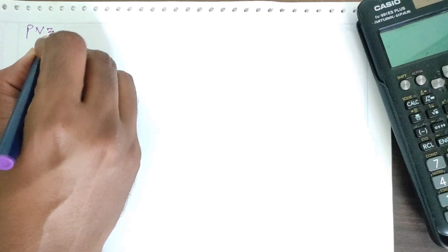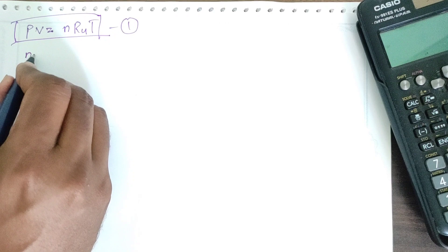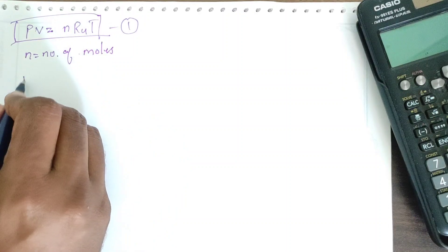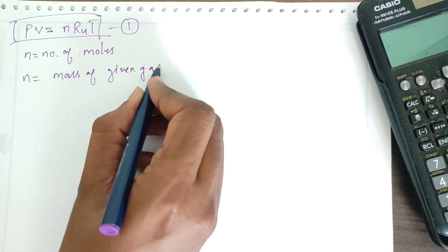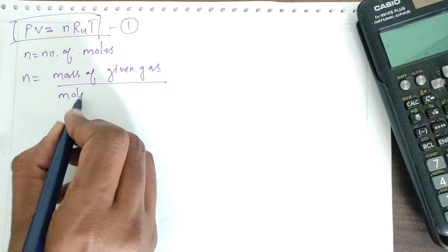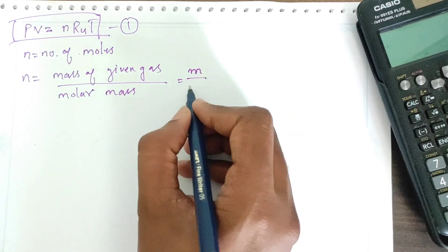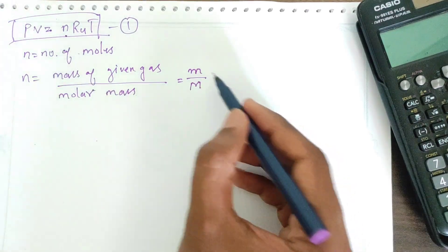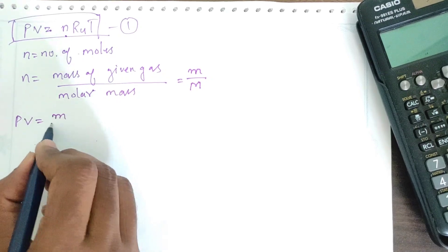PV = NRT is equation number one. Here N is the number of moles. Number of moles N equals mass of the given gas divided by molar mass or molecular mass. I will write mass as small m and molar mass as capital M, so N = m/M.